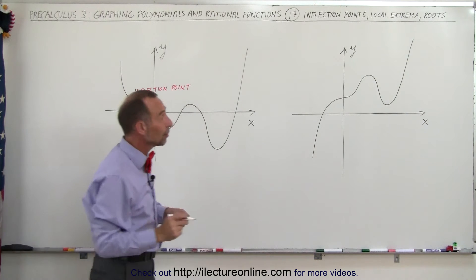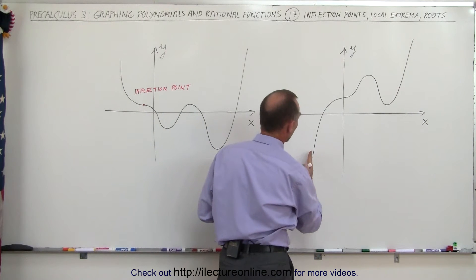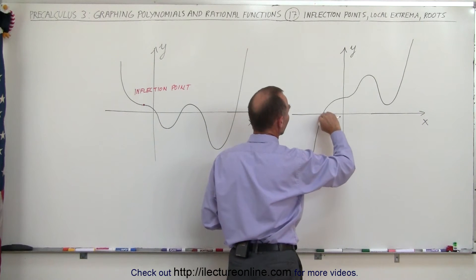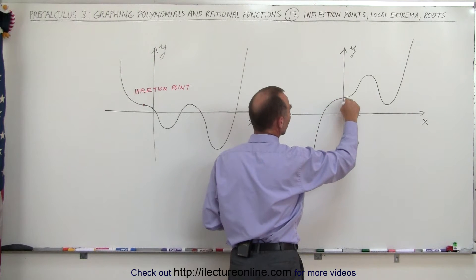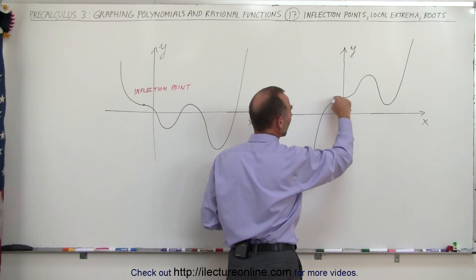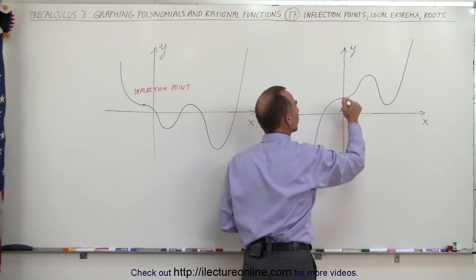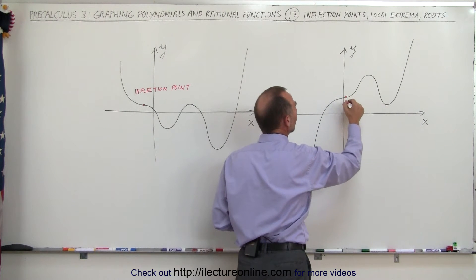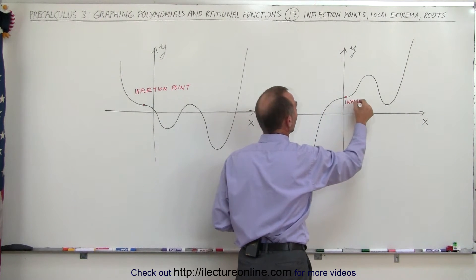If we go to this graph we have a similar situation. Here notice that we have a positive slope. The slope gets less and less and less steep. Here you would expect it to continue going this way, but it doesn't. It stops and then it turns back in that direction. It becomes steeper again, so here again we have ourselves what we call an inflection point.